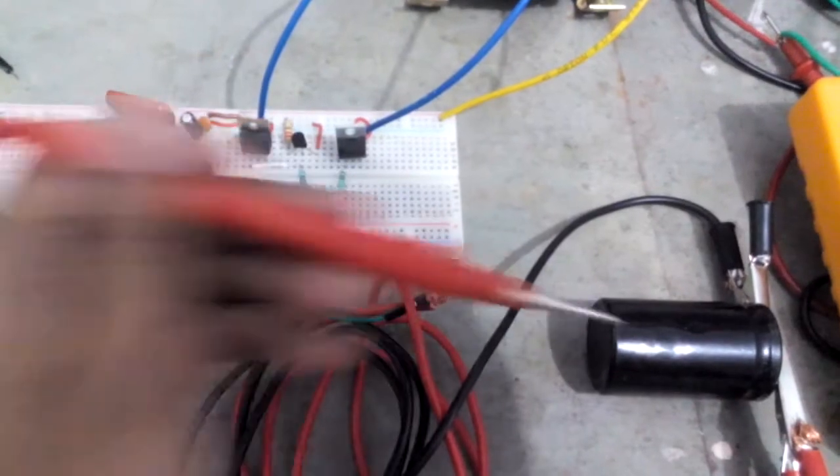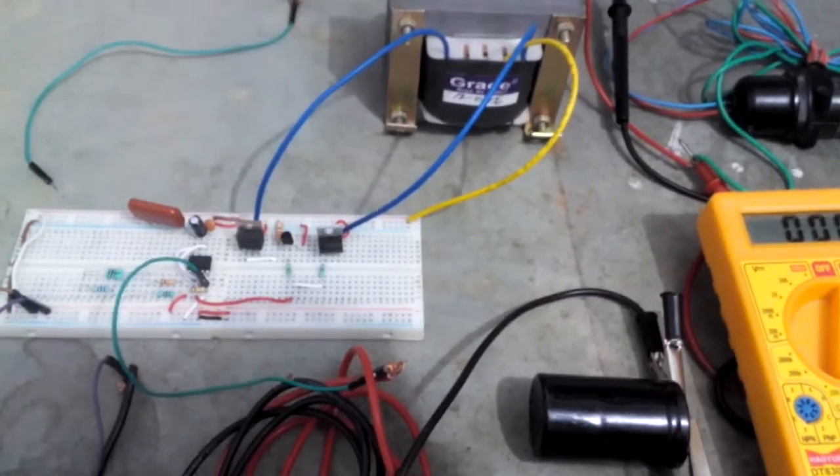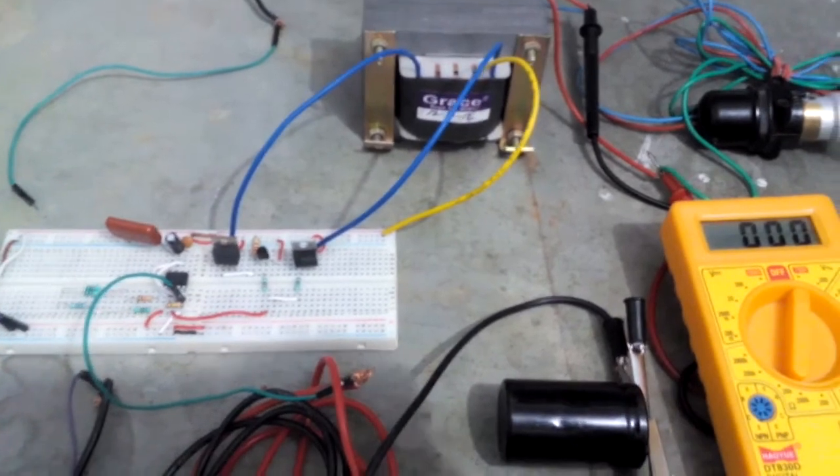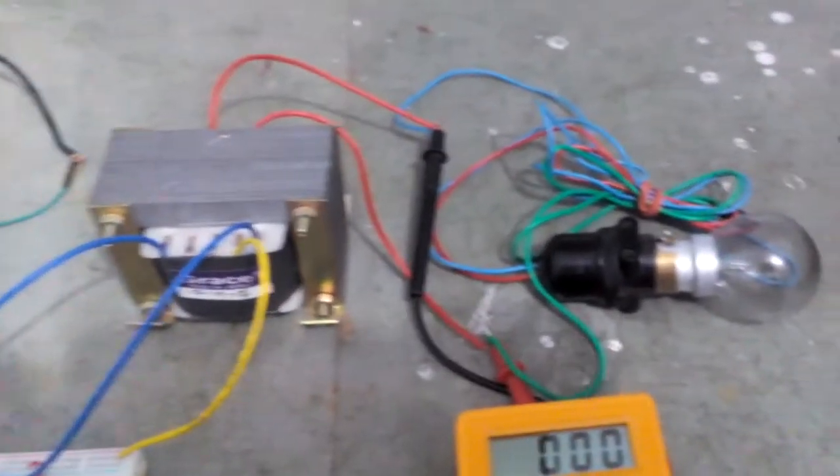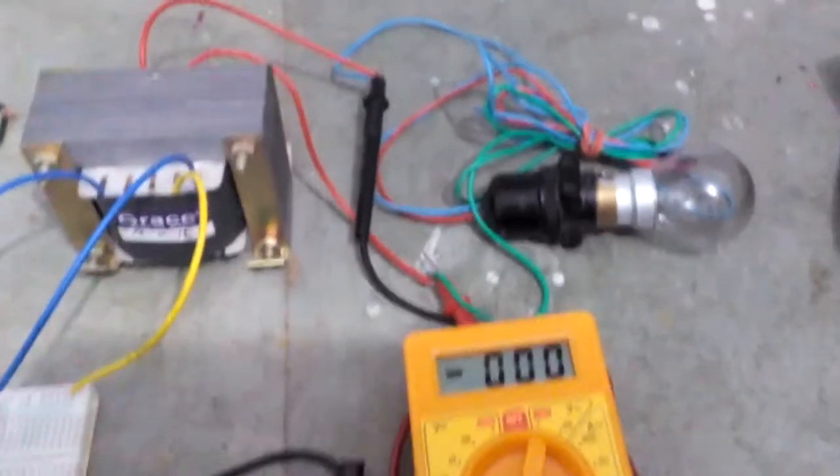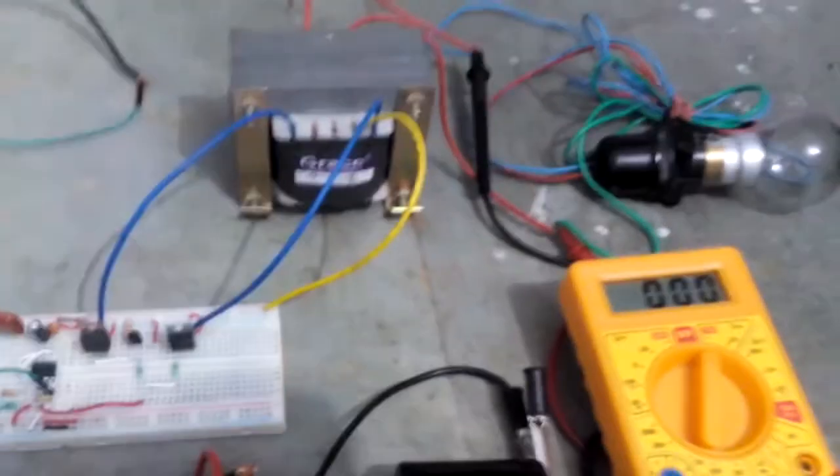Here we have connected this capacitor for avoiding any unwanted voltage spikes at the input supply of 12 volts. At the output of transformer we have connected this AC bulb with a voltmeter. Now I will turn on the supply.